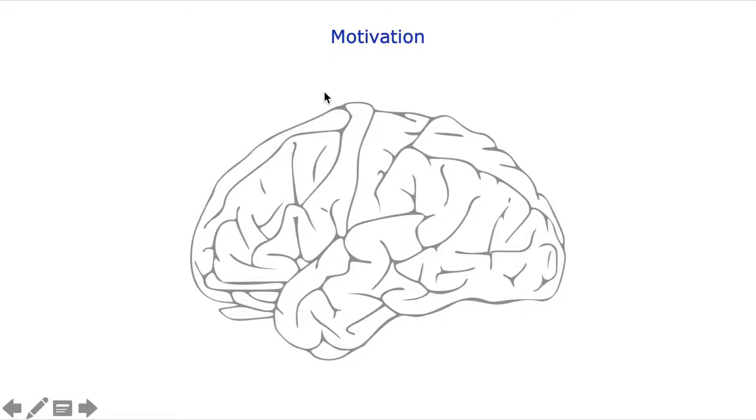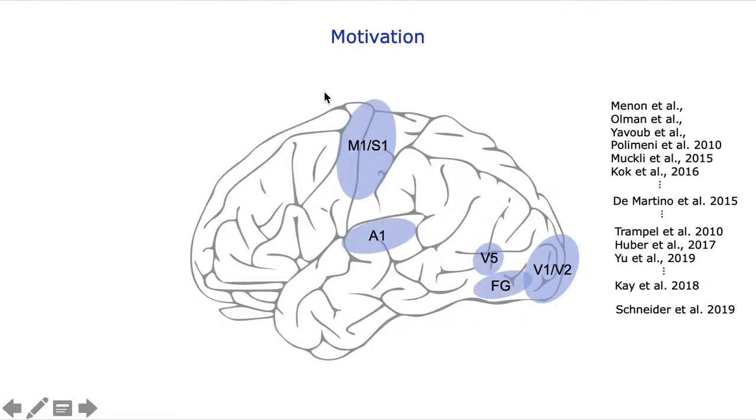Neuroscientific applications of layer-dependent fMRI are getting more popular. While it started on primary areas, it has really taken off more and more to higher order areas too. But there are still a lot of blank areas on the map, especially in the frontal lobe, such as in the dorsolateral prefrontal cortex, DLPFC.